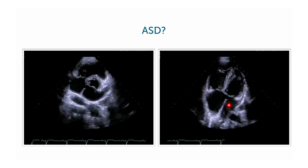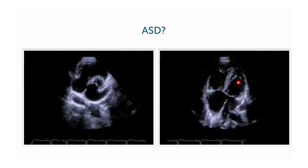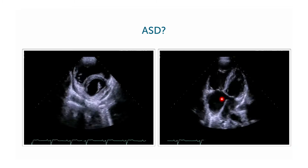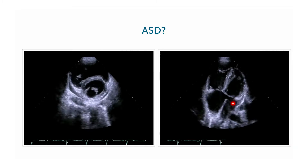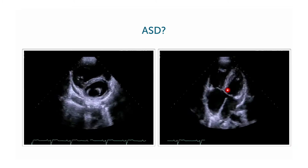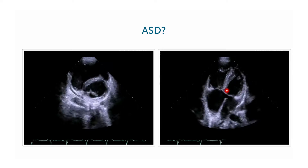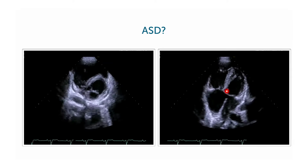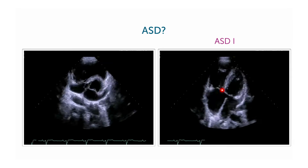The first image you should take a look at is this four-chamber view, where you see that there's a defect right here — and remember, it's very close to the AV valves. This is an ASD1.